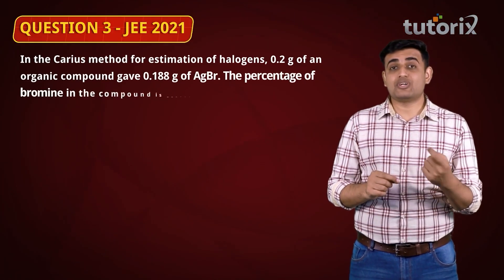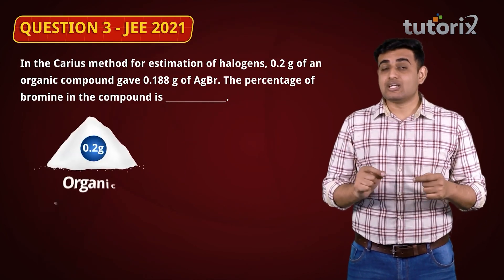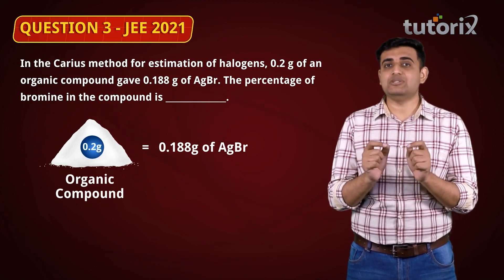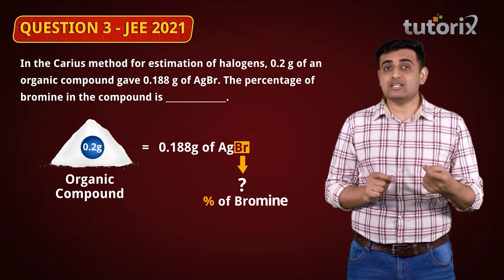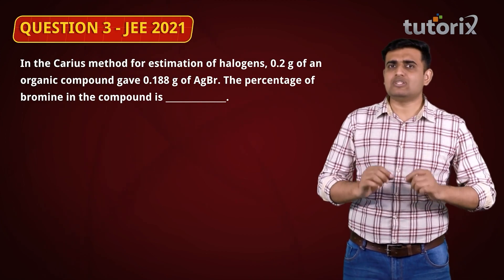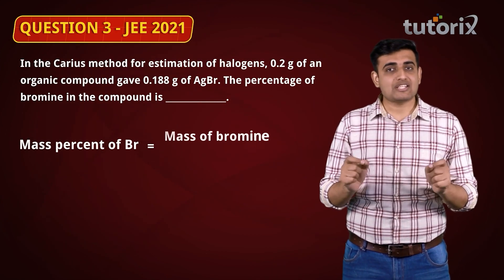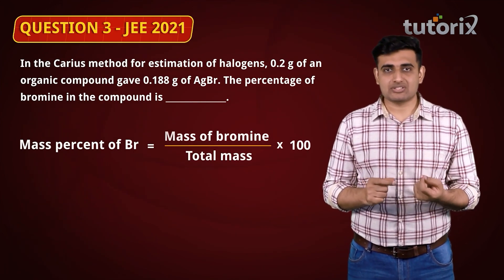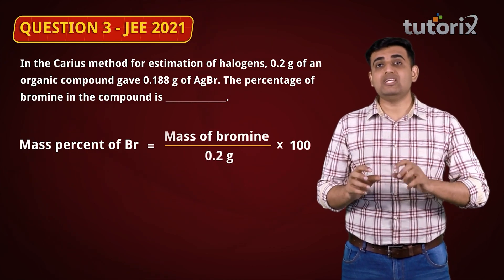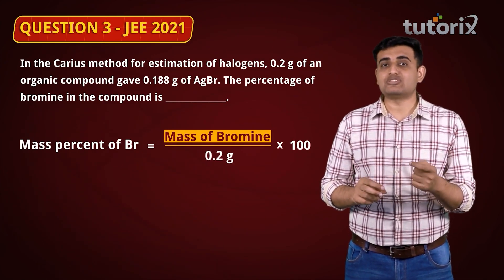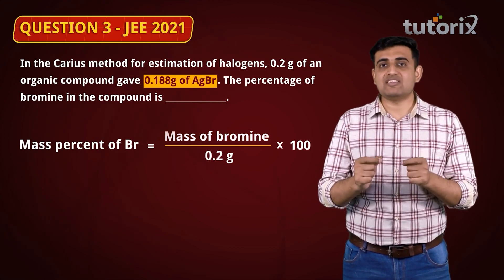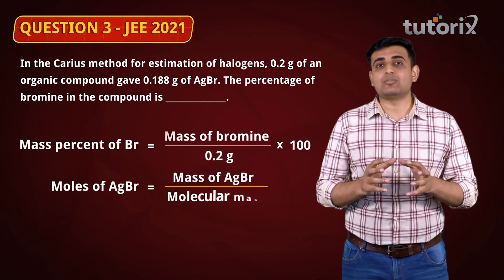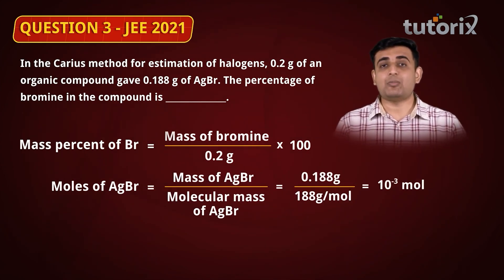Moving to the next question: 0.2 grams of an organic compound gives 0.188 grams of AgBr. We have to calculate the mass percentage of bromine in this compound. Mass percentage of bromine = (mass of bromine / total mass of the compound) × 100. The total mass of the organic compound is 0.2 grams, but the mass of bromine is not directly given. Since the mass of AgBr is given, we calculate moles of AgBr = mass of AgBr / molecular mass of AgBr = 10⁻³ moles.